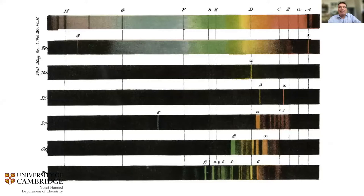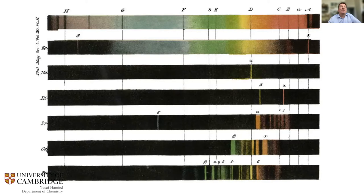They published the solar spectrum with Fraunhofer's dark lines at the top, and below it the emission spectra obtained when heating substances in the flame. For sodium — the third one down — there is a bright line in the yellow region, coincident with Fraunhofer's D lines.